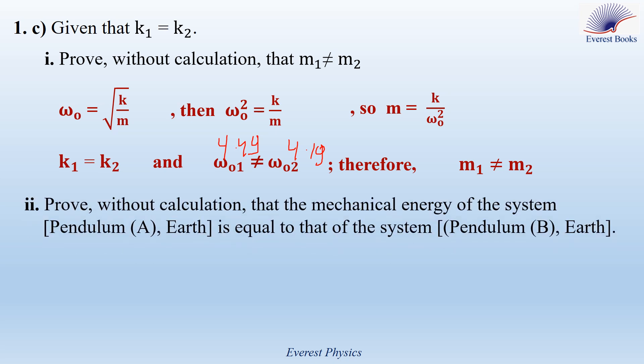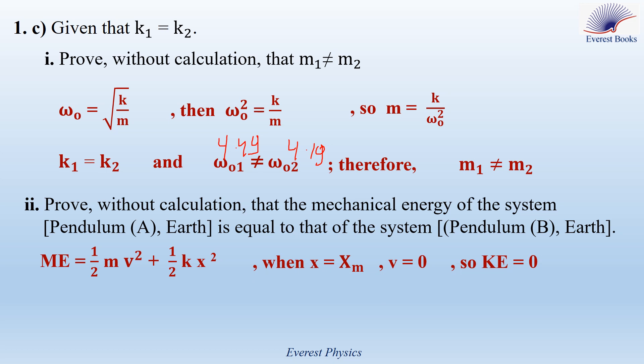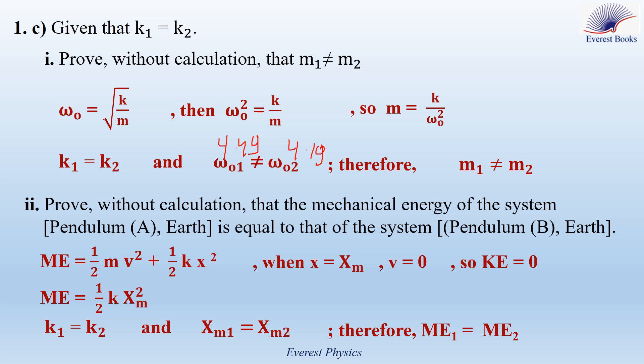Part ii: Prove without calculation that the mechanical energy of pendulum A–Earth system equals that of pendulum B–Earth system. The mechanical energy is 1/2·mv² + 1/2·kx². When x equals xm, v equals 0, so the kinetic energy is 0, giving ME equals 1/2·k·xm². Since K1 equals K2 and xm1 equals xm2 equals 5 cm, it follows that ME1 equals ME2.